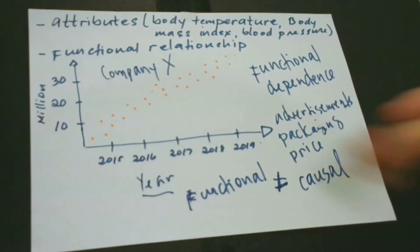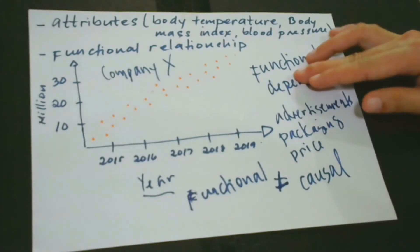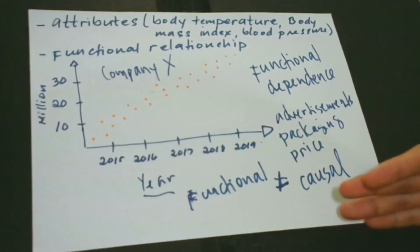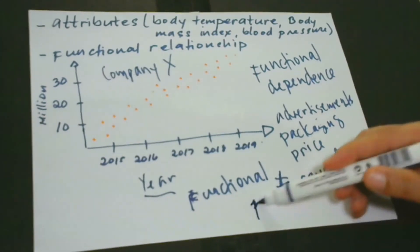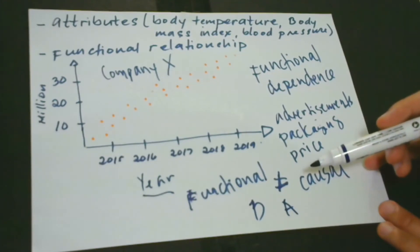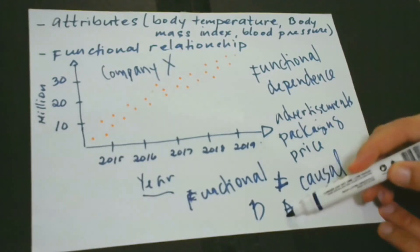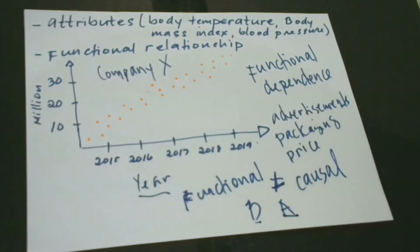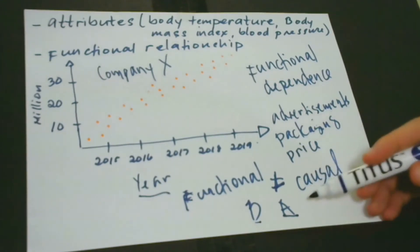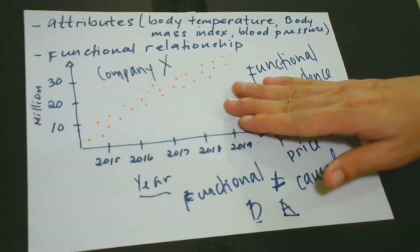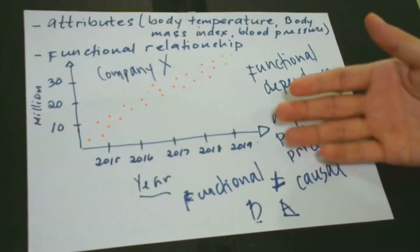Causal dependence can be stated this way: event B causally depends on event A if and only if, had event A occurred, then B would have occurred — and if A had not occurred, then B would not have occurred. To state it in our case: there is no sales if there is no year. It sounds impractical, but this is the best way to express it.